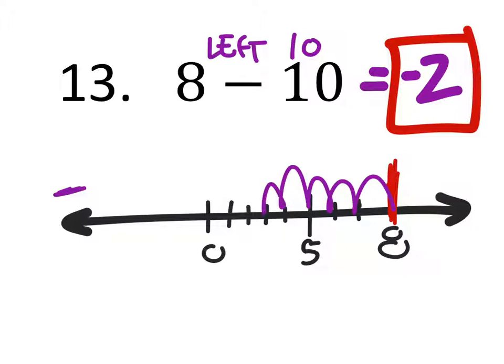So I could count this out: 1, 2, 3, 4, 5, 6, 7, 8, 9, 10. And that lands us at that negative 2 right there as well. So however you prefer to think about that is what you should do.